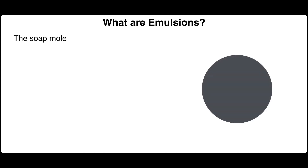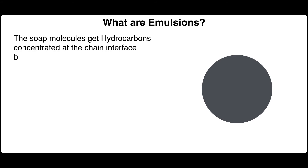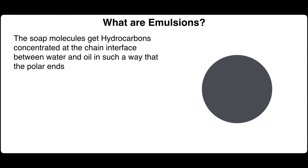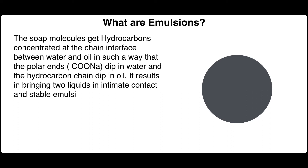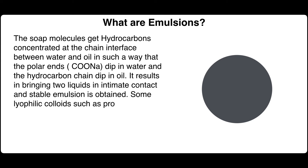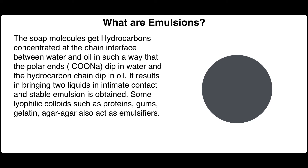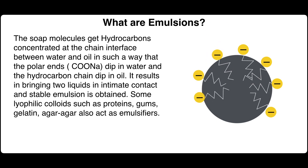The soap molecules get their hydrocarbon chains concentrated at the interface between water and oil, such that the polar end (COO⁻Na⁺) dips in water and the hydrocarbon chain dips in oil. This results in bringing the two liquids into intimate contact and a stable emulsion is obtained. Some lyophilic colloids such as proteins, gums, gelatin, and agar-agar also act as emulsifiers.